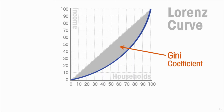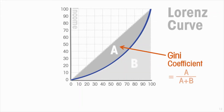So the Gini coefficient is actually the area between the diagonal and the Lorenz curve — call that A — relative to the area of the triangle bounded by the diagonal and the axes, which is A plus B. It is the relative size of A that is the measure of inequality called the Gini coefficient.